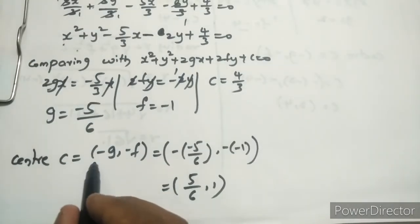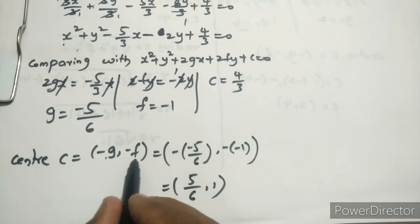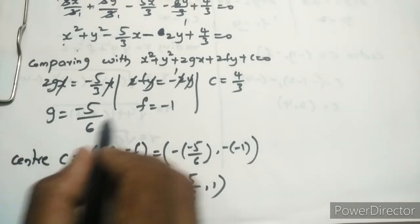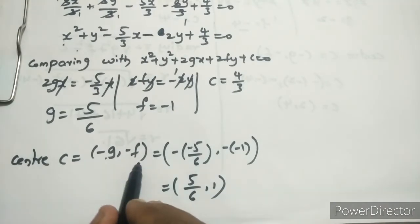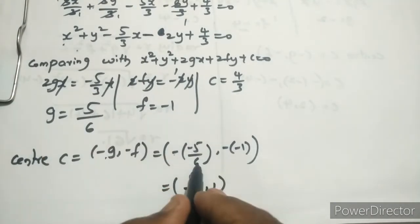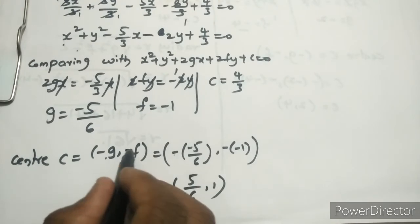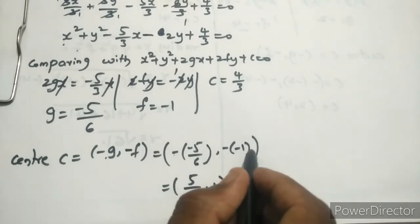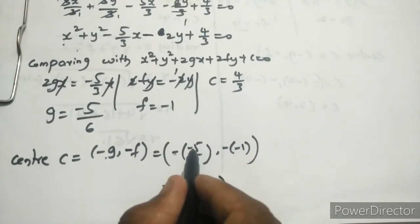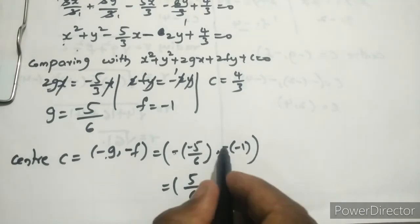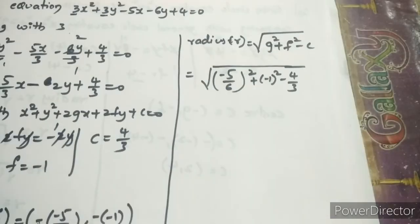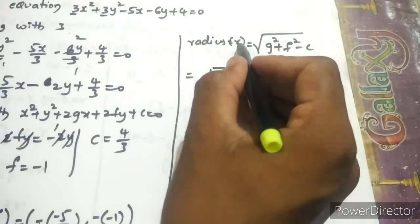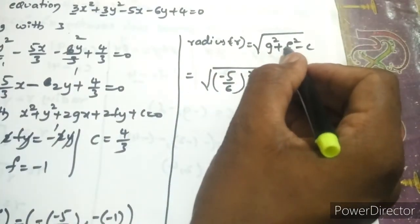The center is (-g, -f). g = -5/6, so -g = 5/6. f = -1, so -f = 1. Therefore the center is (5/6, 1).